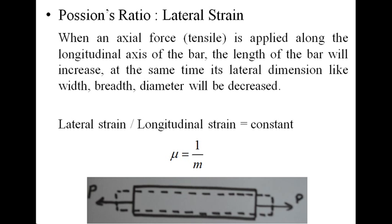The ratio of lateral strain to the longitudinal strain is constant for a given material. This constant is known as Poisson's ratio, denoted by μ, which is equivalent to 1/m. This constant is generally named after the French mathematician Poisson, and the value of Poisson's ratio varies between 0.25 to 0.42 for most metals.